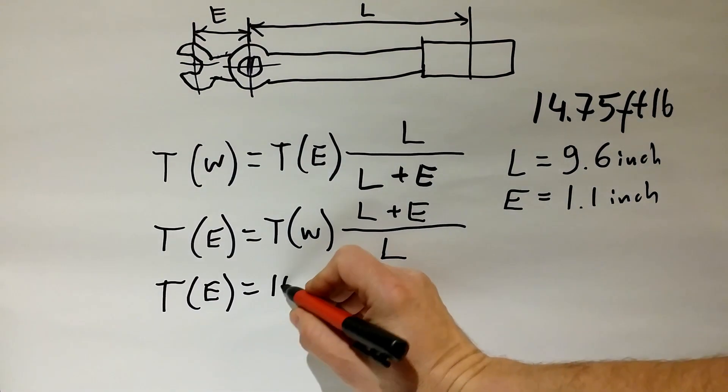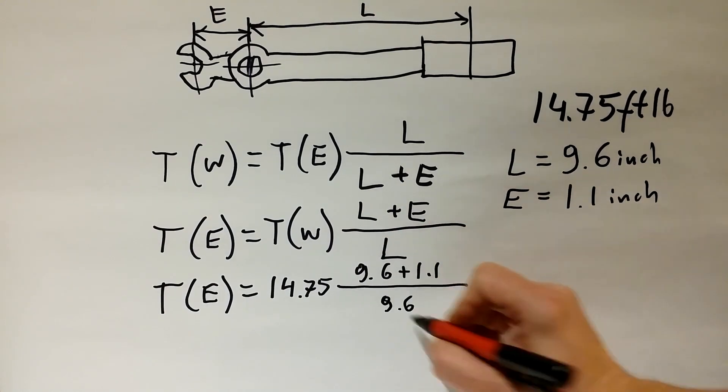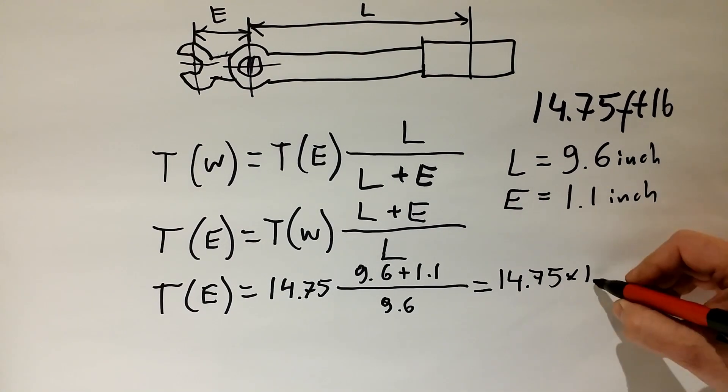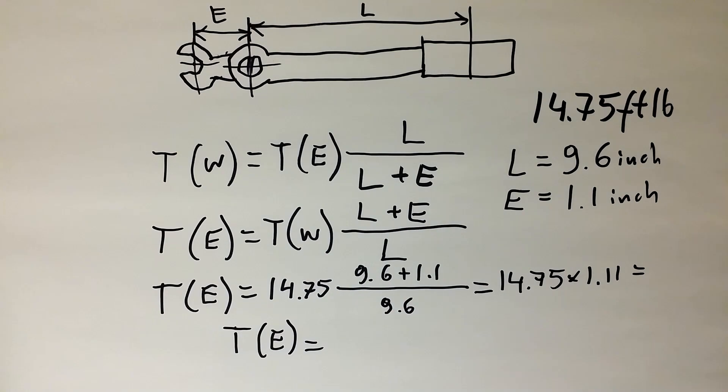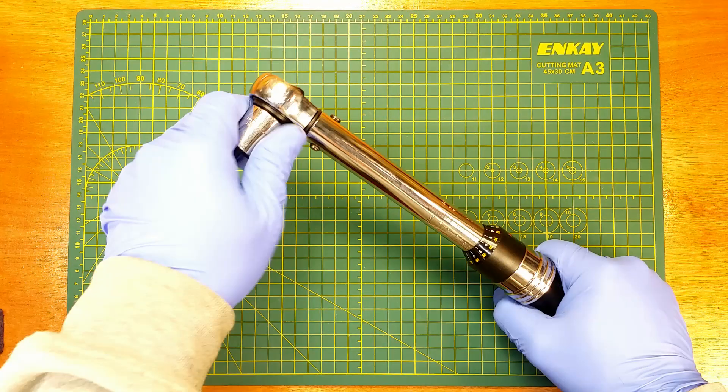The torque applied to the bolt nut is 16.37 ft-lb. If we need 18 ft-lb applied on the bolt nut, then we try another setup until we get to the right value.